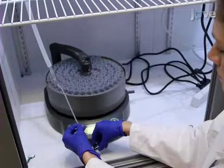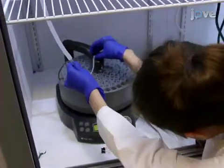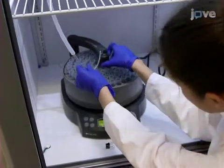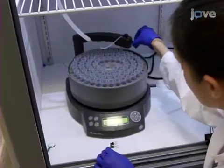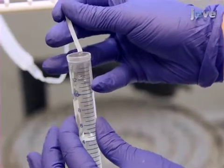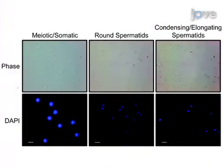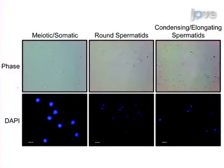After sedimentation is complete, attach the fraction tube to the fraction collector. Adjust the flow rate with the stopcock so that 10 milliliters per collection tube is collected every 45 seconds. Once all fractions are collected, microscopically analyze the fractions for different cell populations. Different cell types can be distinguished based on cell size and nuclear morphology.